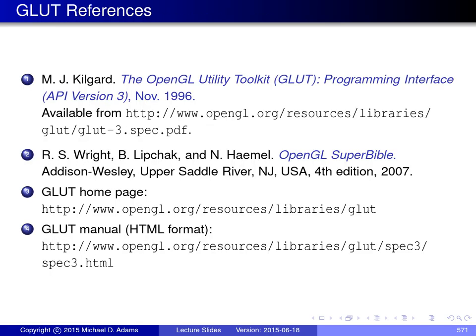This slide lists a few references on GLUT. Reference one is the actual specification of the library — a very detailed description useful when writing GLUT code. Reference two is a good reference on OpenGL that also includes some information on GLUT. Reference three is the homepage for the GLUT library. Reference four is the GLUT manual in HTML format, which may be easier to navigate than a PDF version.